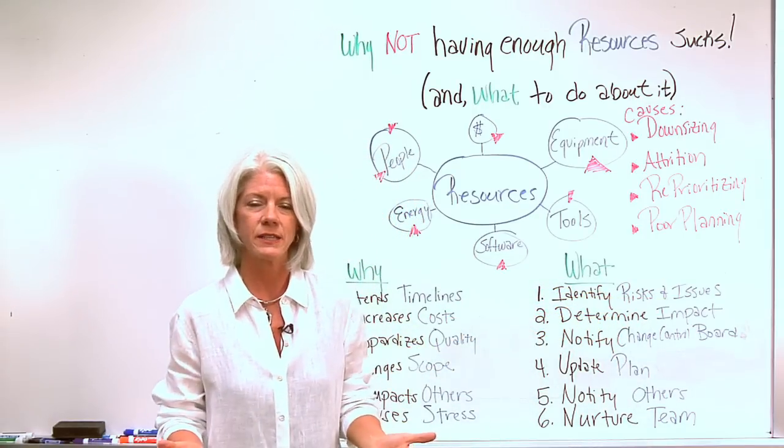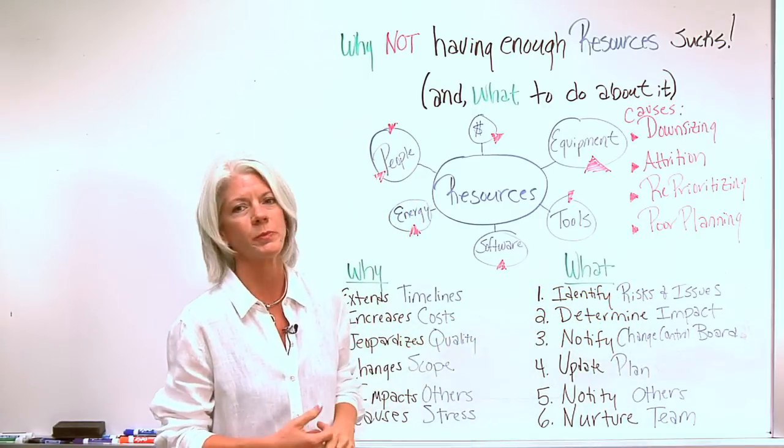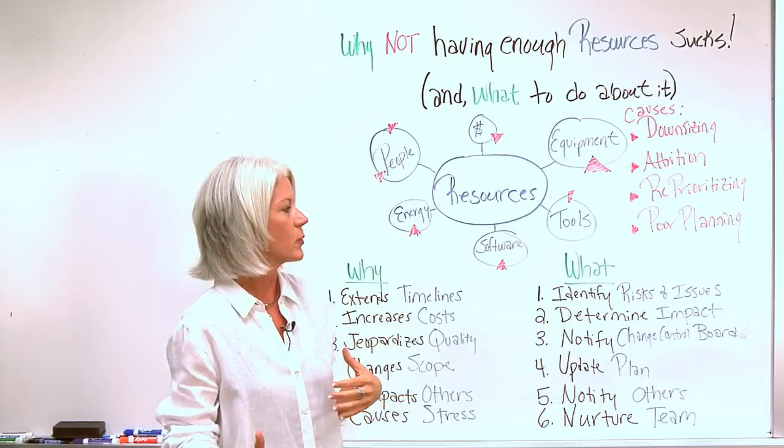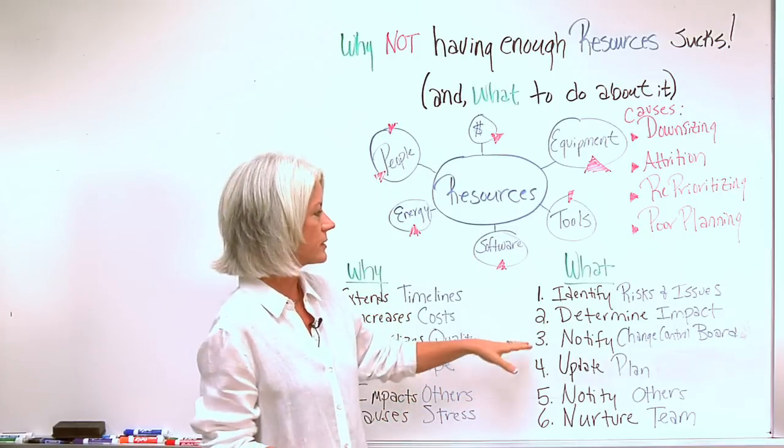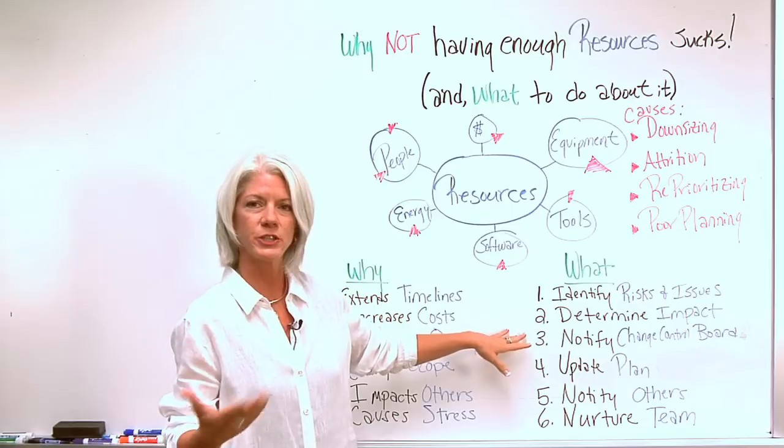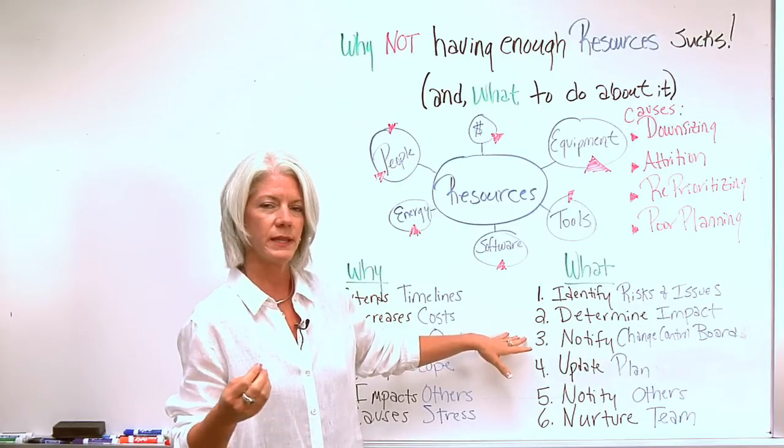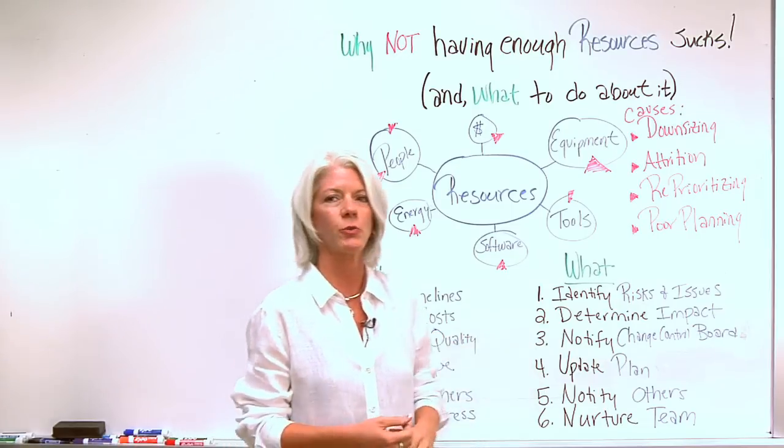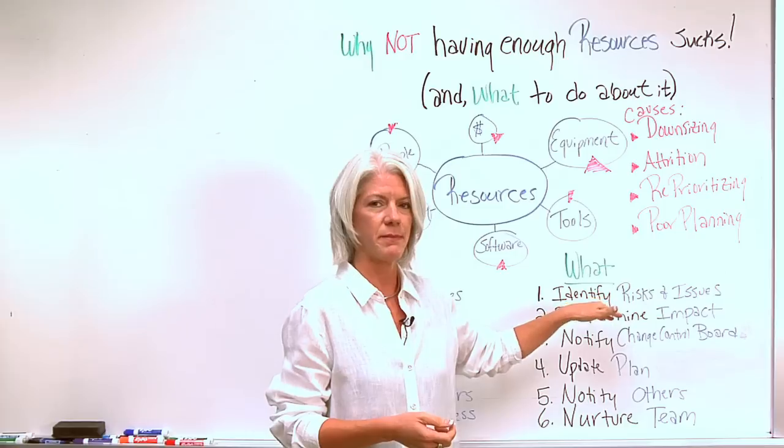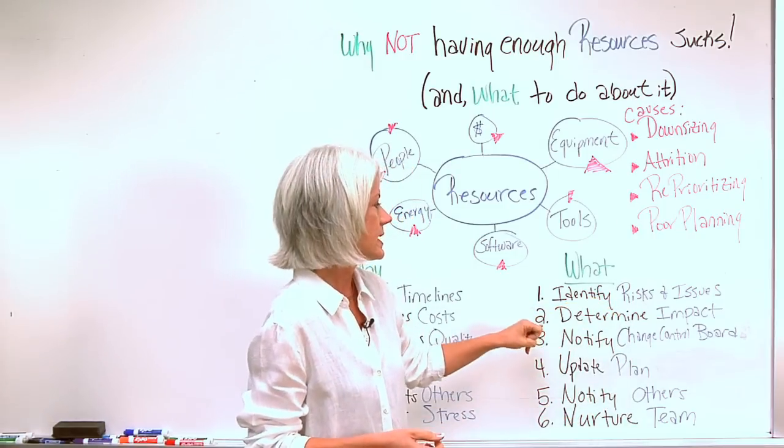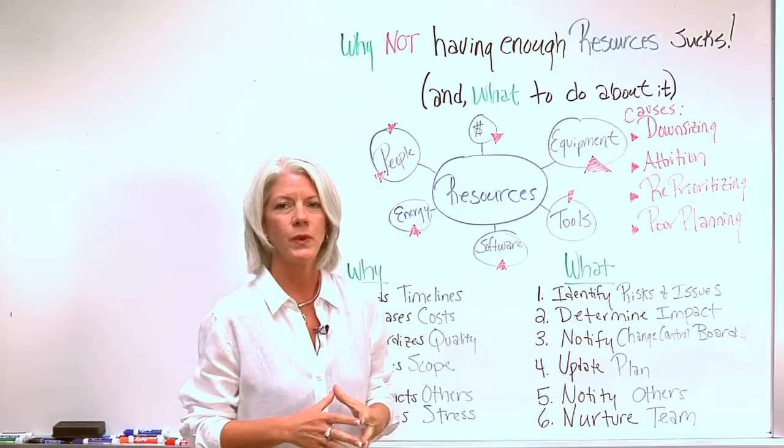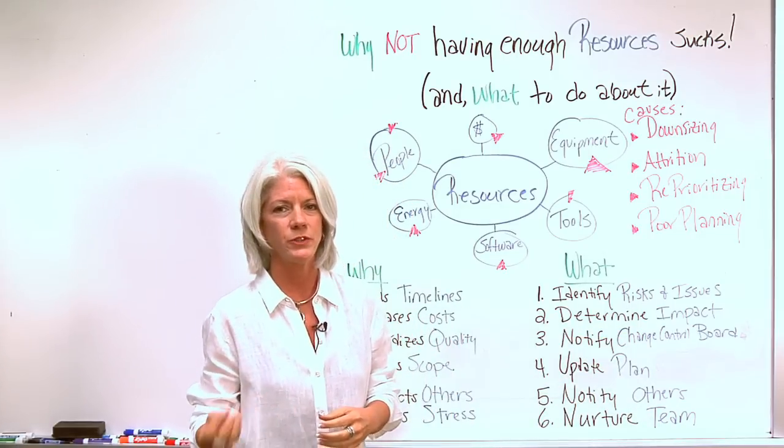Determine what impact it's going to have. Remembering the triple constraint that we're responsible for - changing in one of the components is more likely going to change the others. So determine the impact and go to the change control board. It's good to let them know you've already identified how it's going to impact and some of your recommendations, but ultimately leave it to the change control board to determine what they're going to do with that information.